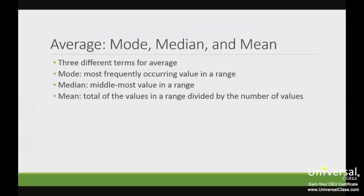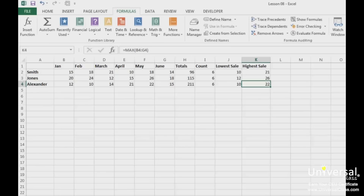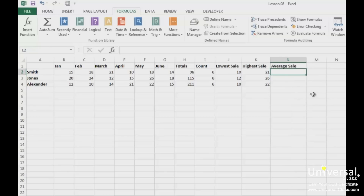For any of you math buffs out there, you should know that when we talk about averages in mathematics, there are three different terms: mode, median, and mean. Mode is the most frequently occurring value in a range. Median is the middle-most value in a range. Mean is the total of the values in the range divided by the number of values. The mean function in Excel is AVERAGE. Let's add a new average sale column, and then use the AVERAGE formula to find the average sale for each person.